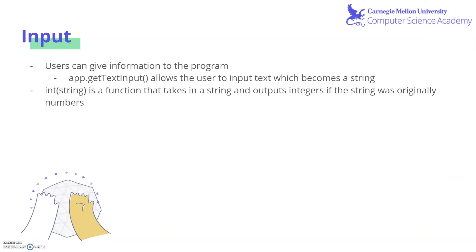We have already learned ways for users to give information to our program by clicking on it or using keys on their keyboard. There's another way that users can give information, by giving us a text input using app.getTextInput, which allows the user to input text, which becomes a string. If you want to convert a string into integers, you can use the function int and input a string, which will output the integers if the string was originally all numbers.